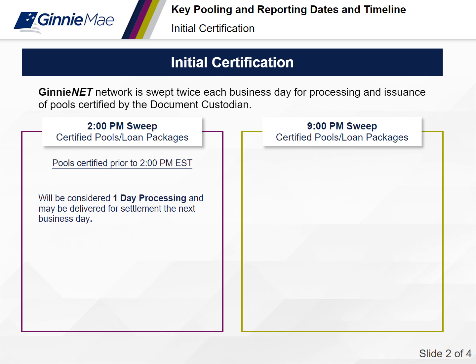Just in case your investors are not looking for that security on the 8th and had another date, that information sent will come back from the Fed as DK — do not know. Then we'll have to get in touch with you as an issuer, saying we sent out this information but it came back do not know, because it could be a mix-up with the delivery dates. So you just want to be careful of that.